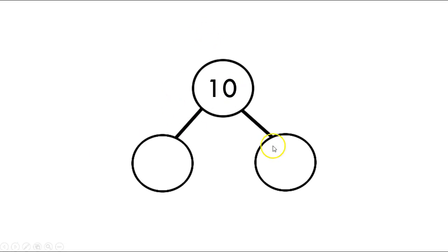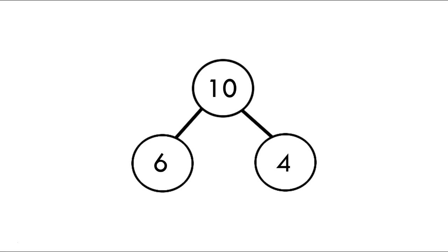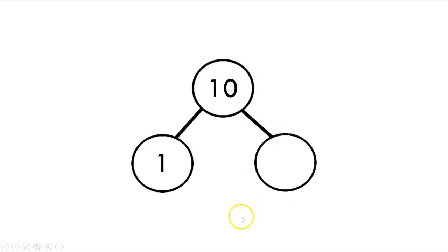Next, we're still making 10. Our part over here is 6 — 6 plus what equals 10? That's our missing number. Go ahead and fill in the blank. Did you put 4? You are awesome if you put 4, excellent job! Now, 10 is our whole part. We have 1 plus what equals 10? Go ahead and fill this in. Did you put 9? Excellent job if you put 9.